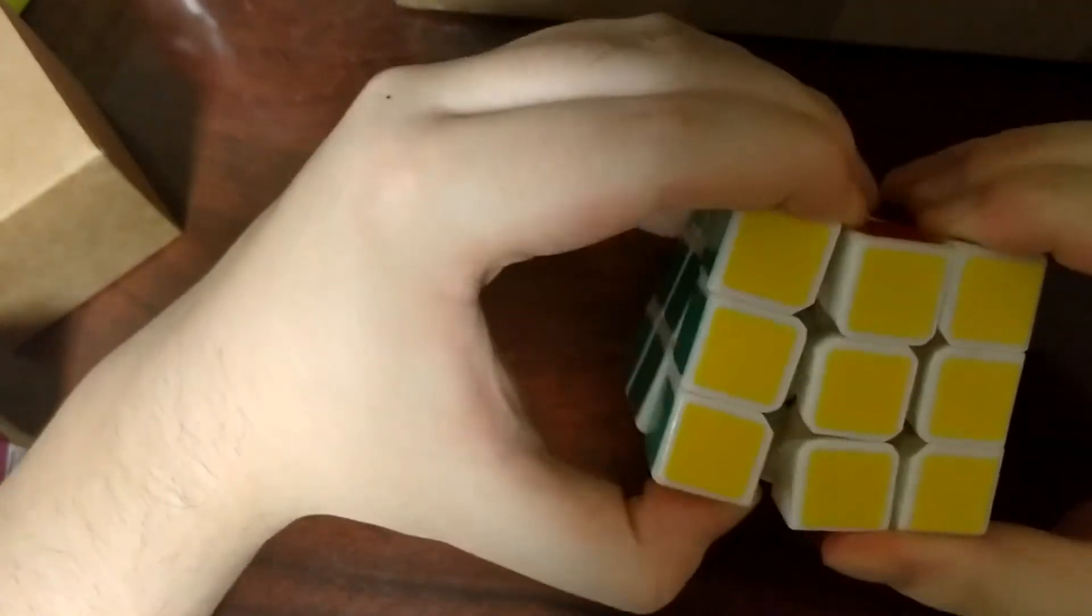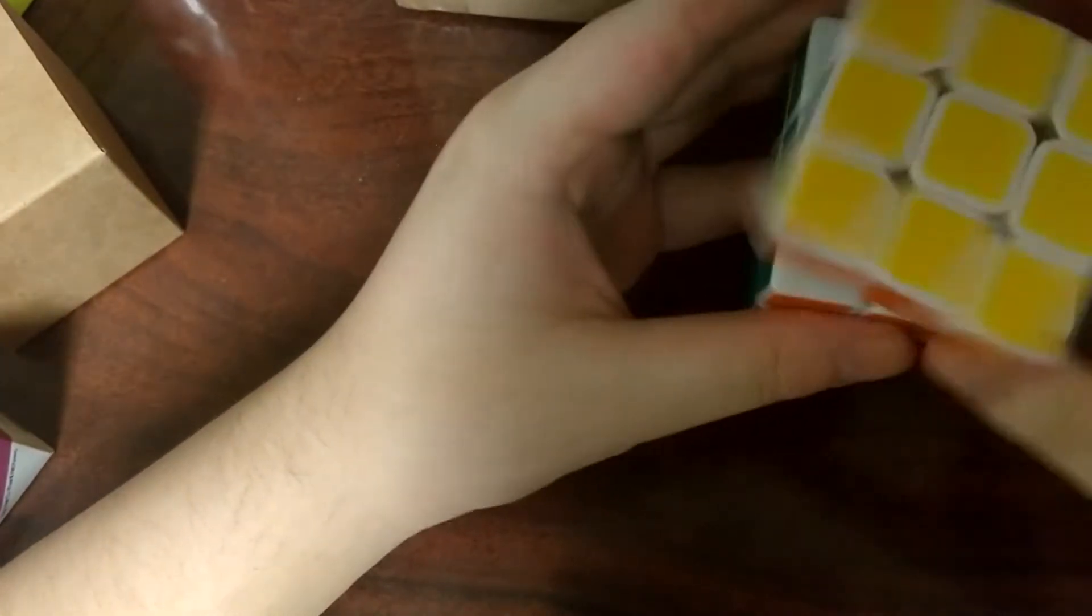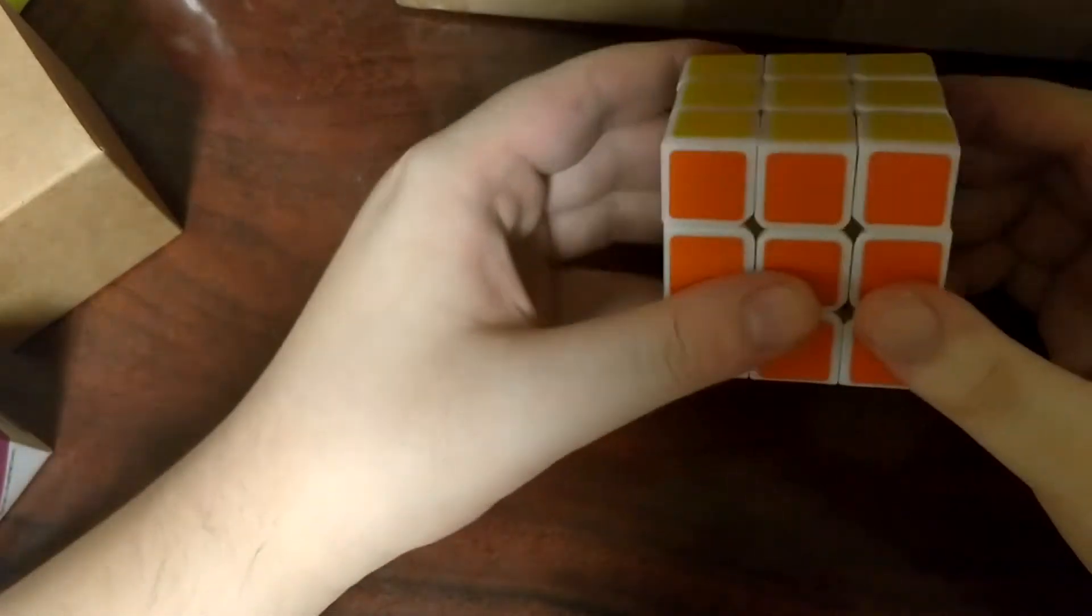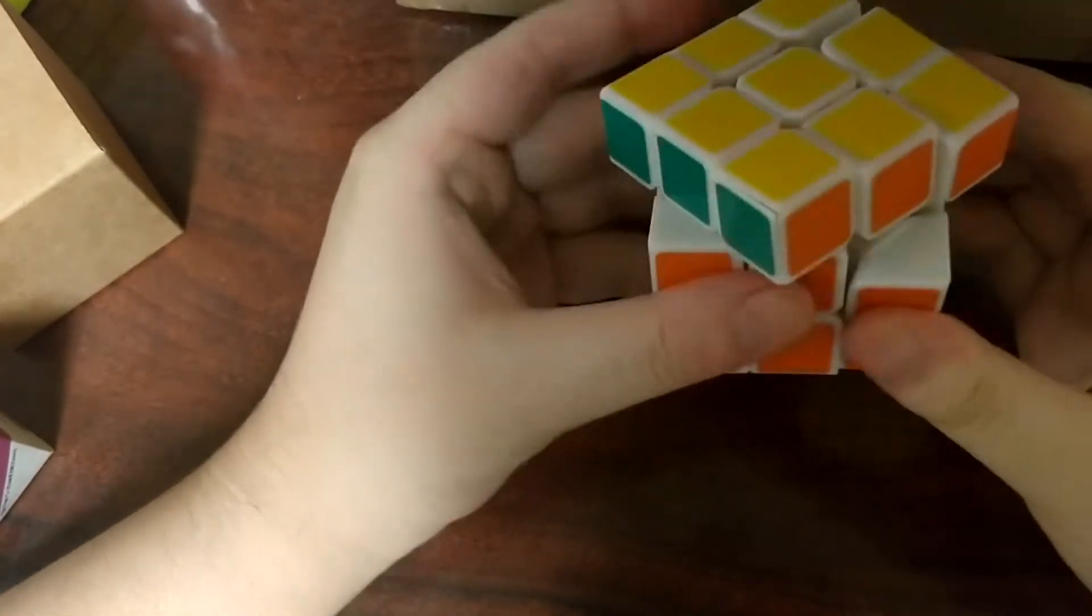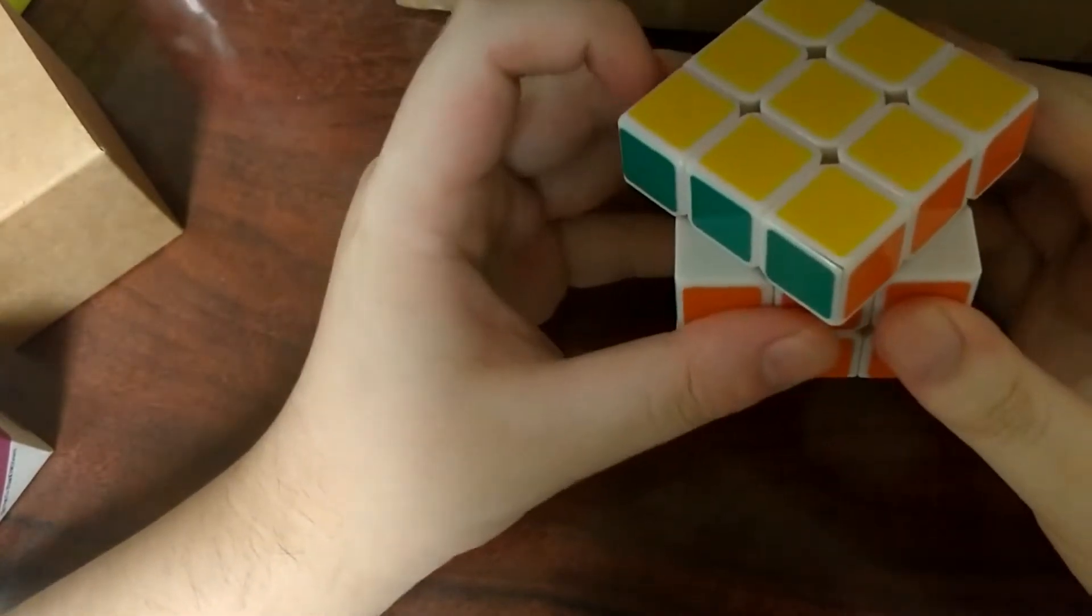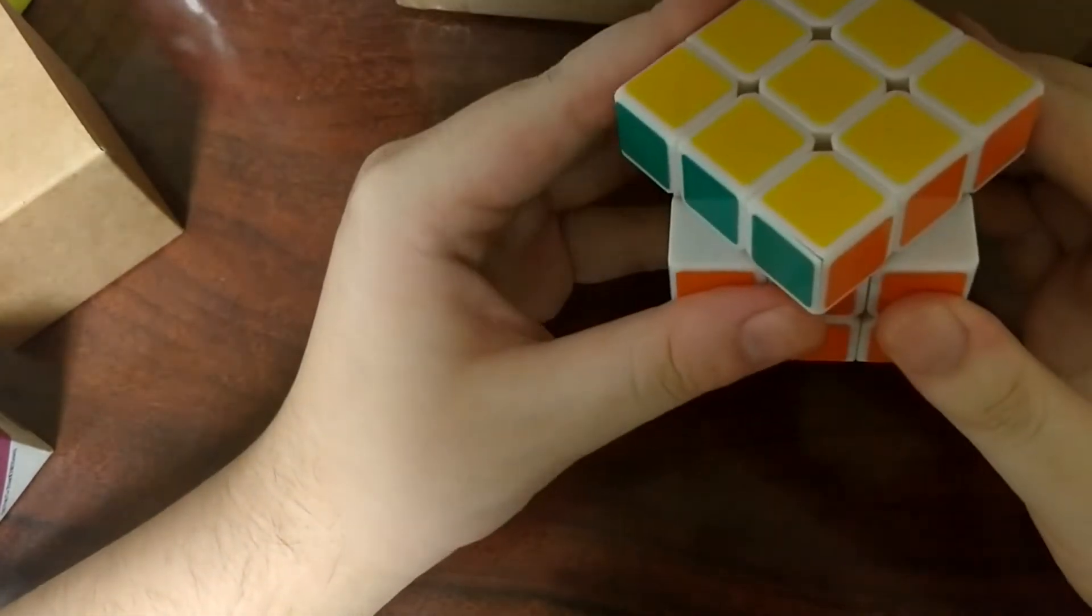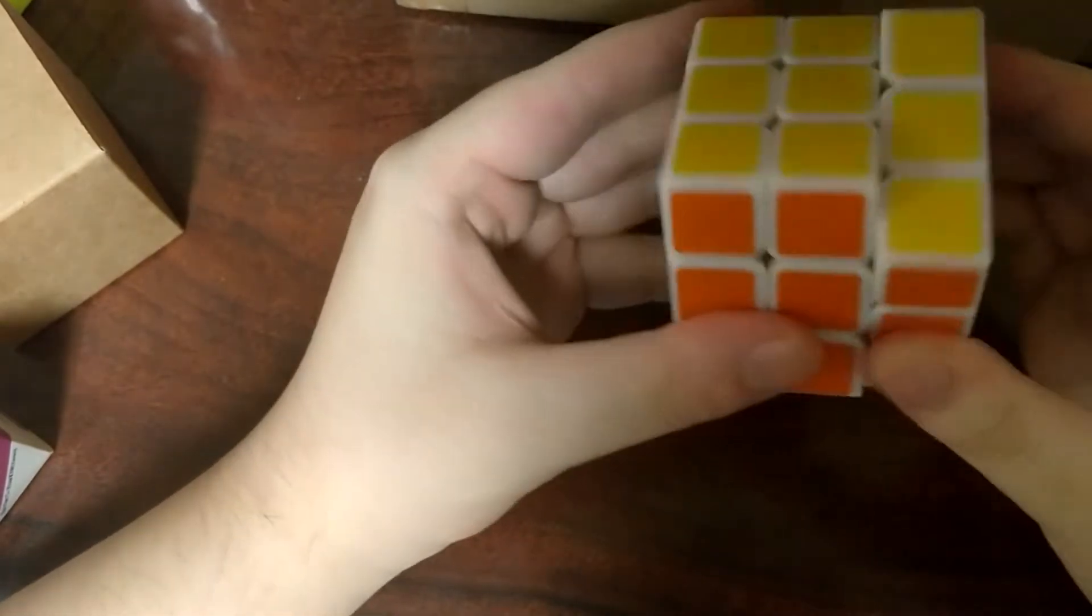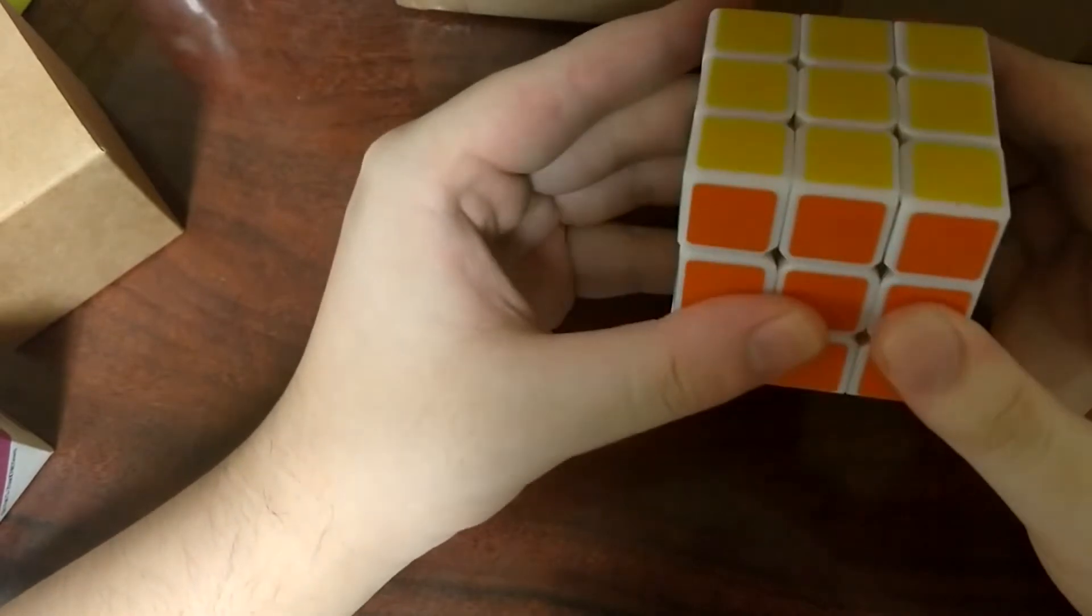So the cube feels pretty tight right now, so I don't think popping's gonna be an issue. Let's test out some corner cutting on this. So, alright, so we can do, on these tensions, just about to 45 or so. And let's try reverse. Reverse is pretty snappy.